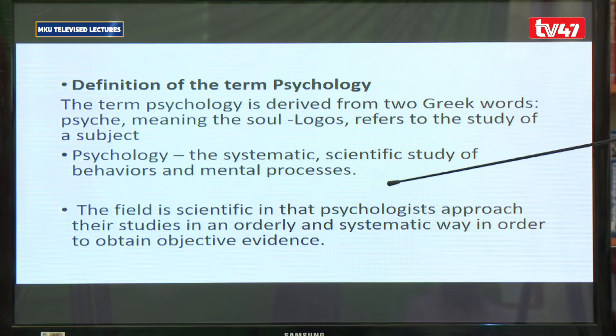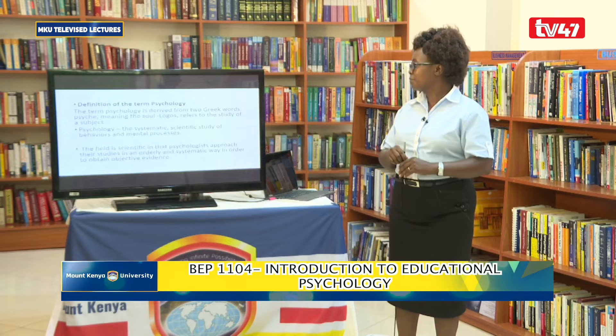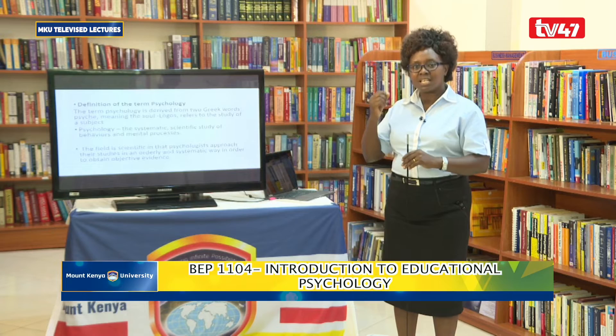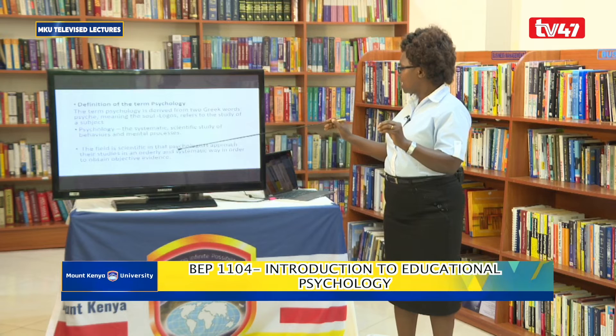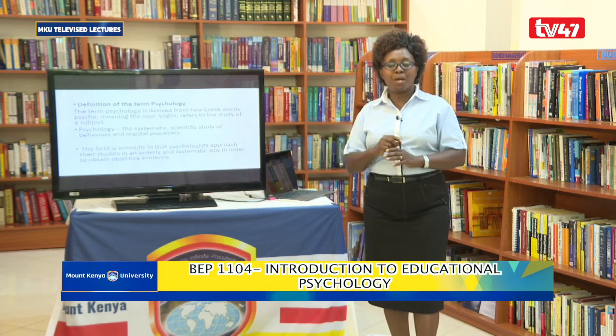The definition says it is the systematic scientific study of behaviors and mental processes because behavior is inferred from our thinking, from our cognitive processes. Something very important to remember is that psychology is not a humanity, psychology is not an art — psychology is a science. This field is scientific in that psychologists approach their studies in an orderly, systematic way in order to obtain objective evidence.